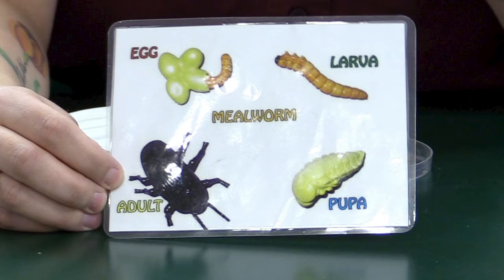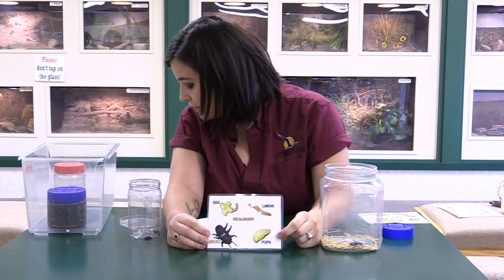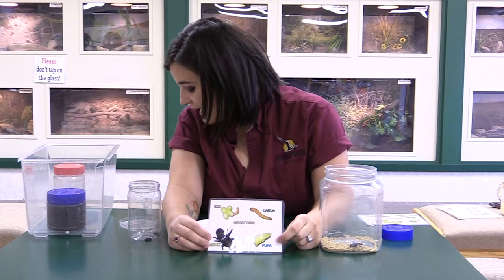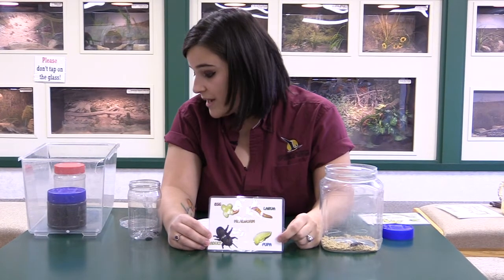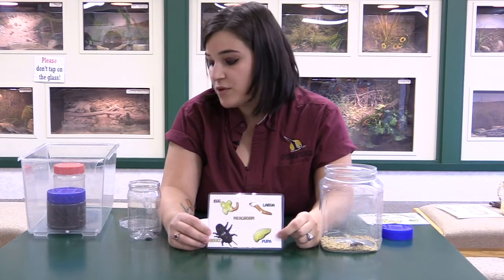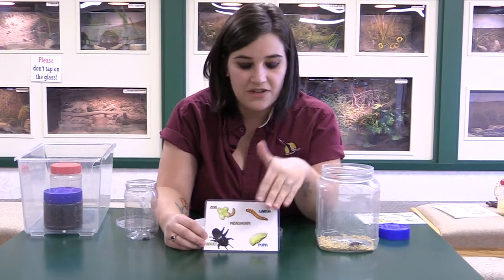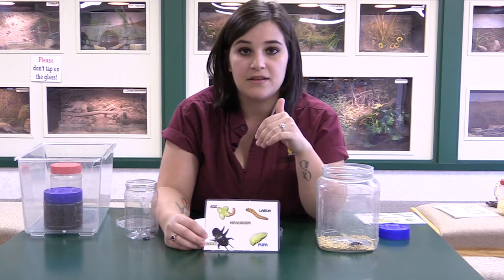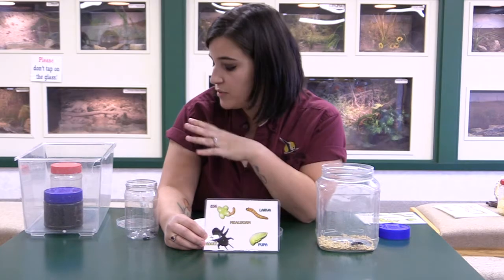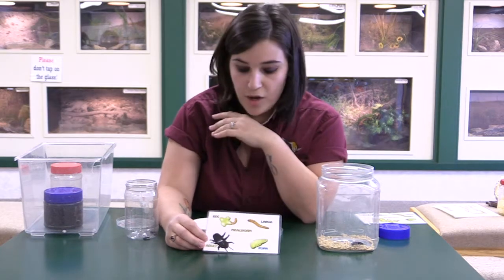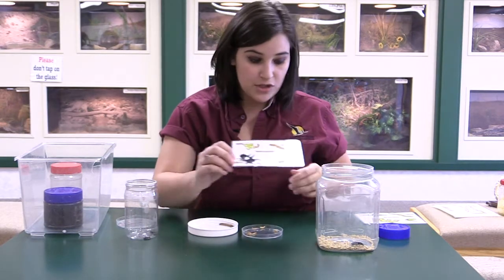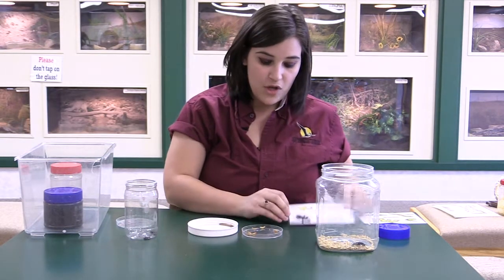With an incomplete life cycle, you have an egg and you have a larva, or a nymph, but there is no difference in appearance between the young and adult forms. We will look at that later, but right now we are going to look at mealworms.